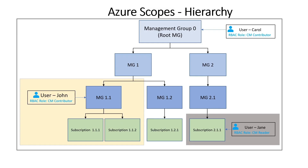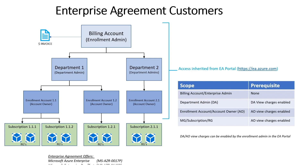Granting this RBAC access should work for web direct offers like pay as you go, Visual Studio, Visual Studio Enterprise, or Azure in open. Enterprise customers with a Microsoft Azure enterprise offer or enterprise dev/test offers can also view data in the cost management blade with some additional scopes like billing account, if you're an enrollment admin, or department, if you're a department admin, or enrollment account, if you're an account owner. You can select these scopes in the scope picker in cost management.